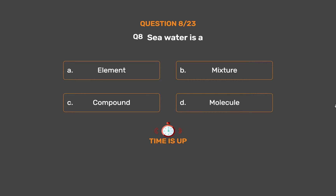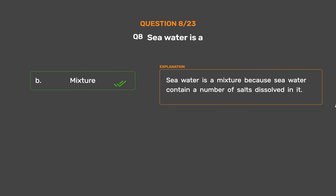The correct answer is Option B: Mixture. Seawater is a mixture because seawater contains a number of salts dissolved in it.